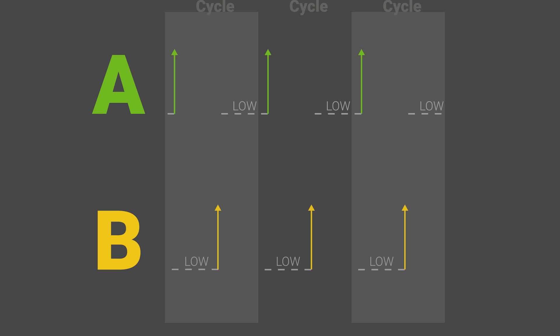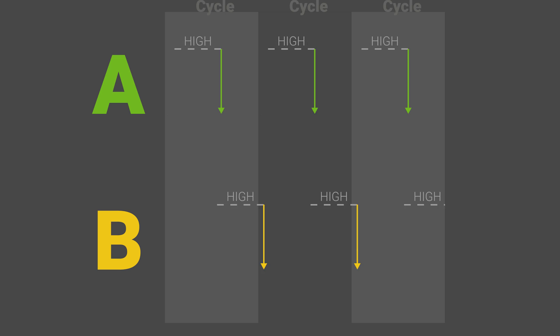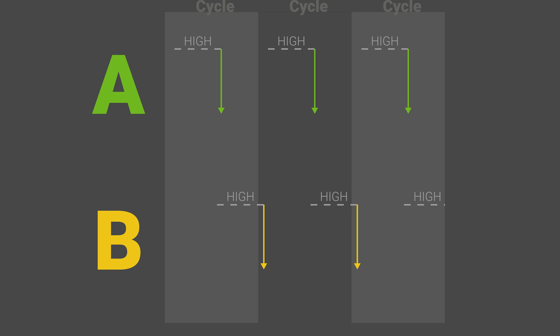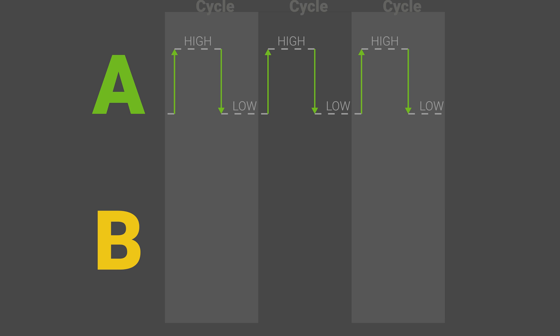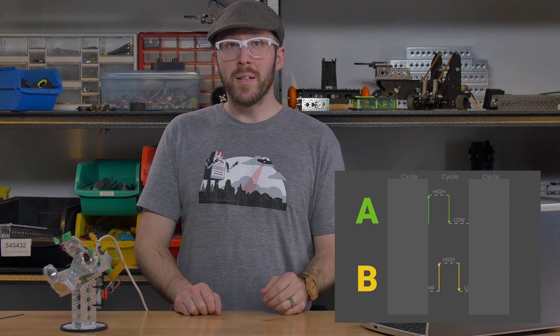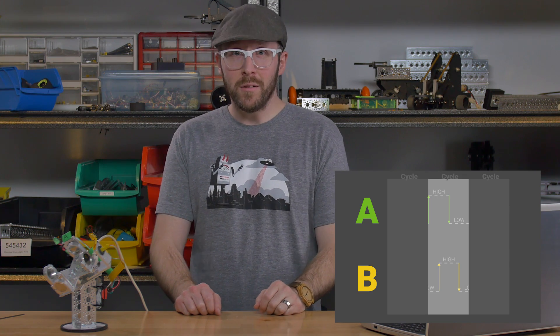Each state transition from low to high is called a rise, and from high to low is called a fall. You can count just the rises, or just the falls, or just one channel. But if you're counting the rises and falls of both channel A and channel B, you're in what's known as 4x mode — and this is where the 'quad' in quadrature comes from. All four countable events in sequence is known as a cycle.